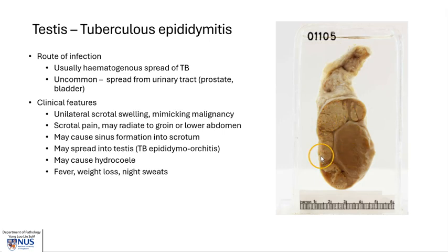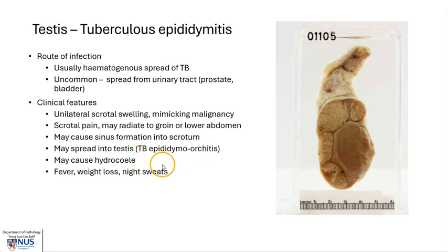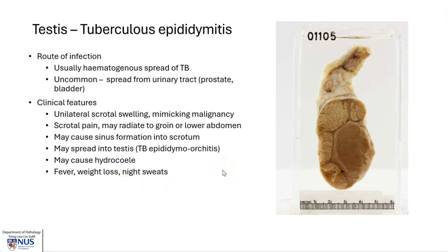This is an example of TB epididymitis, and the case shown on the virtual microscopy slide shows not only involvement of the epididymis, but also involvement of the testis, giving rise to epididymo-orchitis. There may also be associated hydrocele, and sometimes patients may experience systemic symptoms of fever, weight loss, and night sweats.